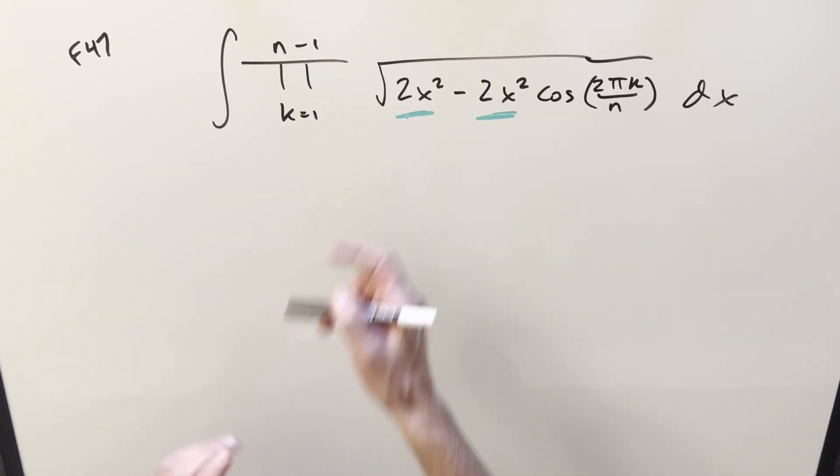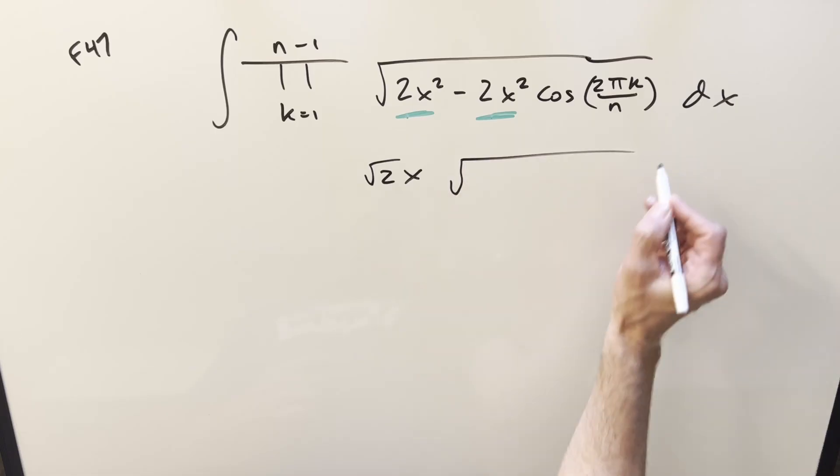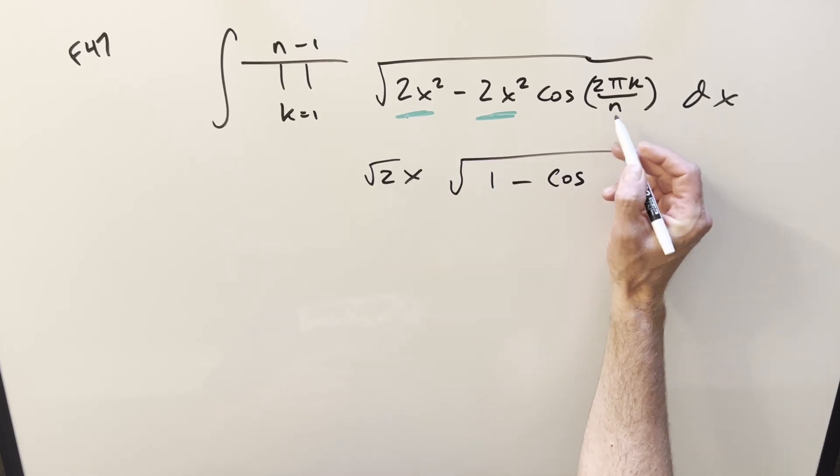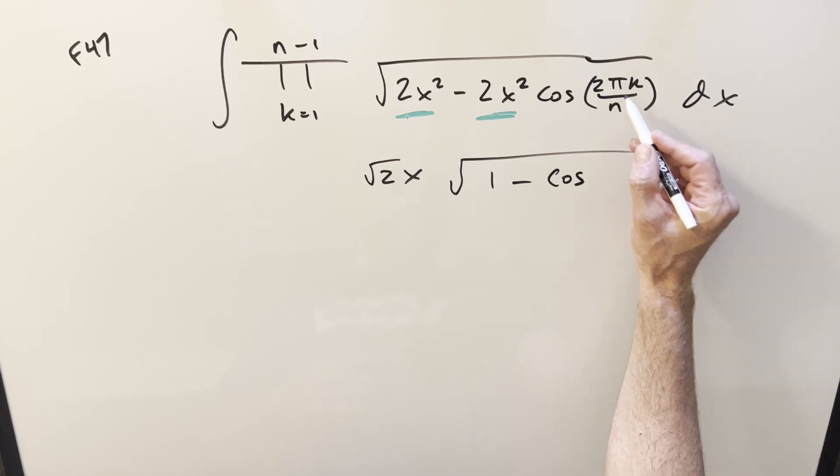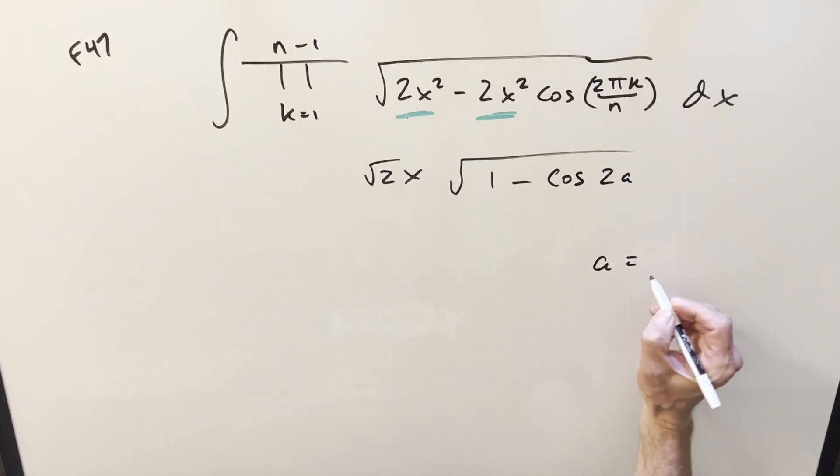So when I take that outside of the square root, we can write it as square root of 2x, and then what's left is going to be something like 1 minus cosine. Let me abbreviate this. I'm going to write this as 2a, and we'll just call it, just to save a little writing, pi k over n. We'll call that a.